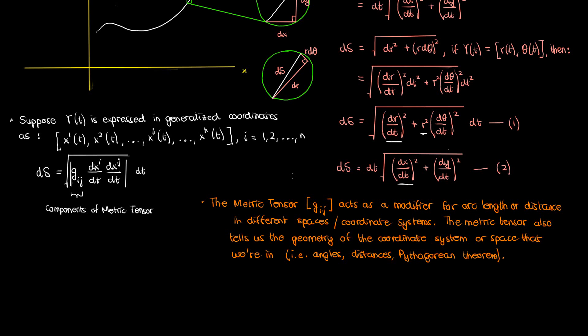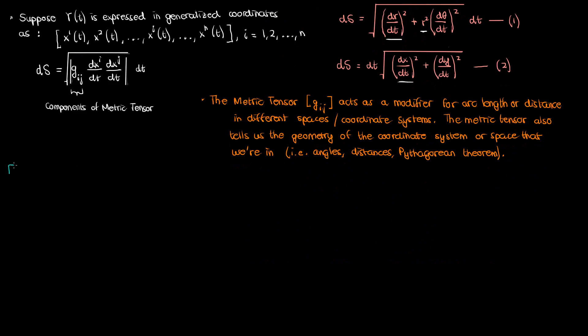Now that we've given some intuition behind the metric tensor, let's look at some examples of the metric tensor in different coordinate systems. Specifically, I'm going to focus on the three-dimensional Cartesian, cylindrical, and spherical coordinate systems — the ones we're all familiar with.